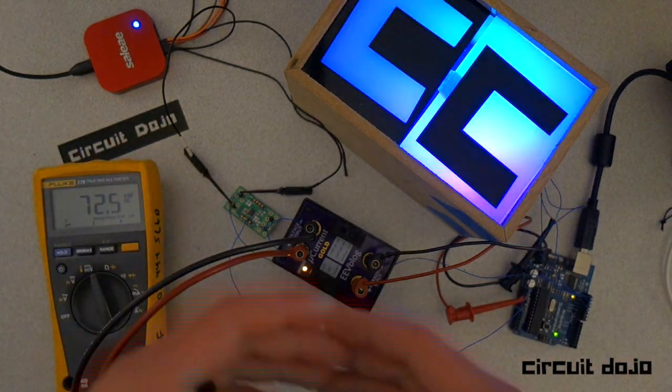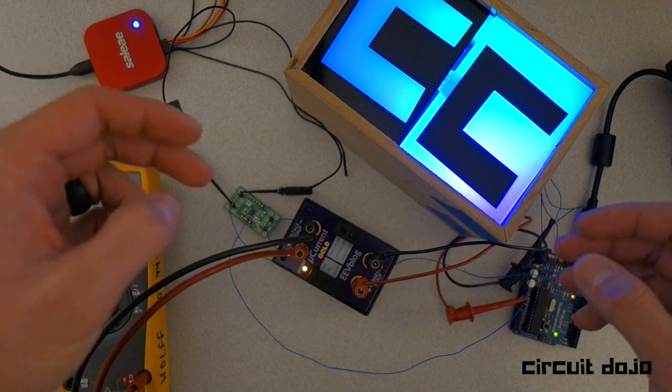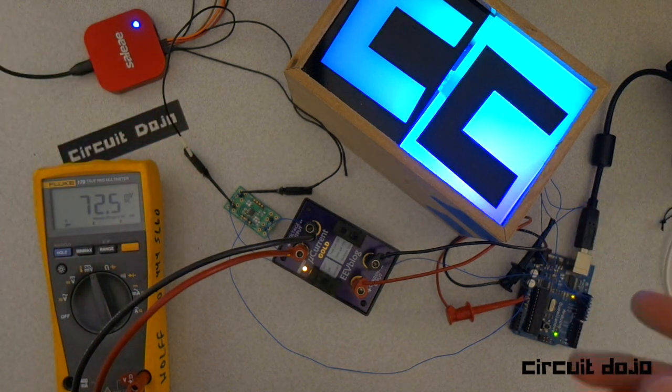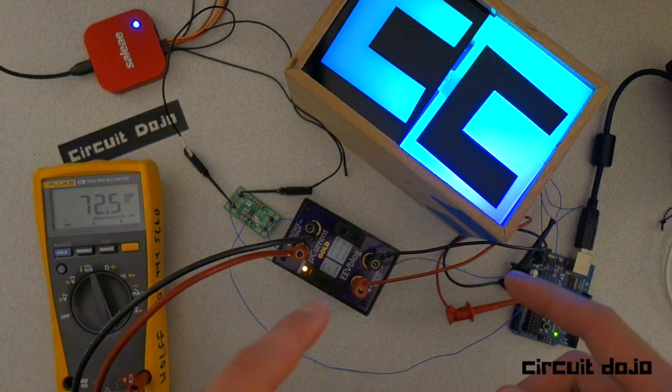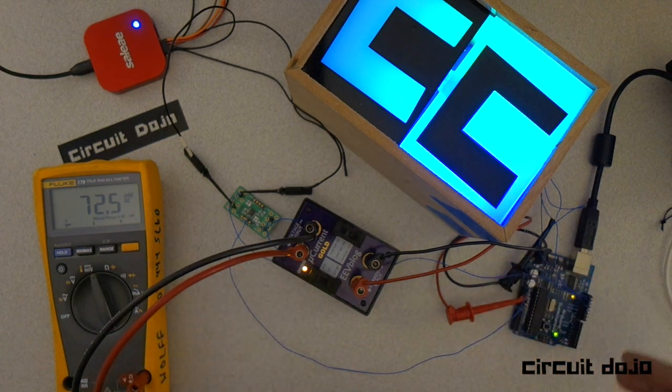So back to my concern, what will this current profile look like over time? All my connections are here. So I'm going to start my capture of 30 seconds at 10 mega samples per second. Reset the Arduino and watch what happens.